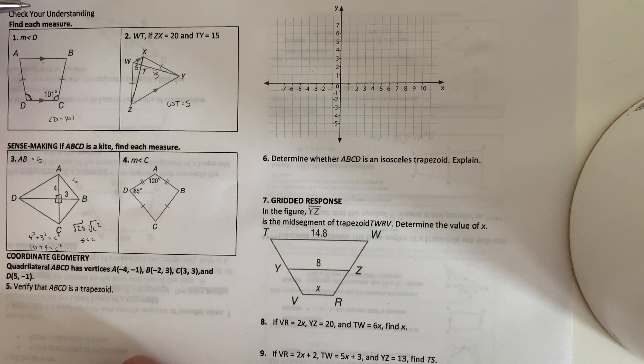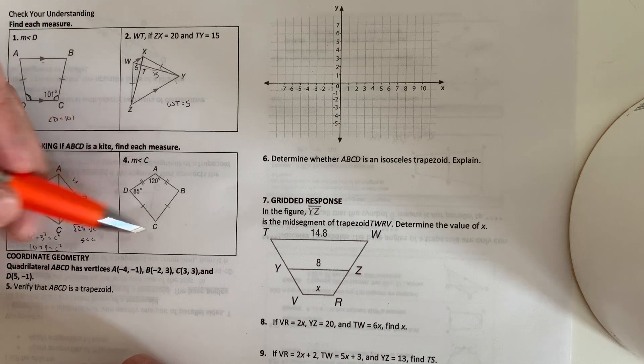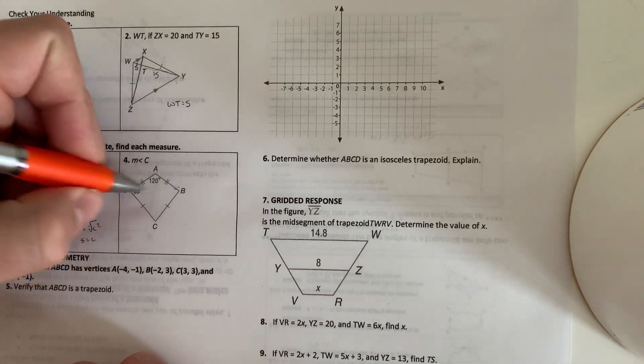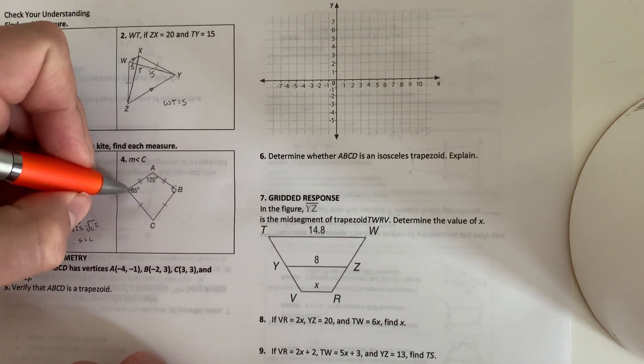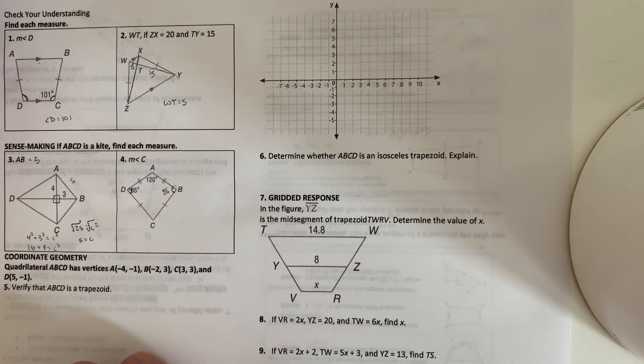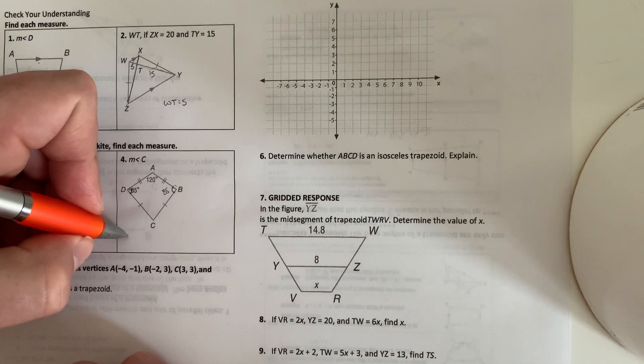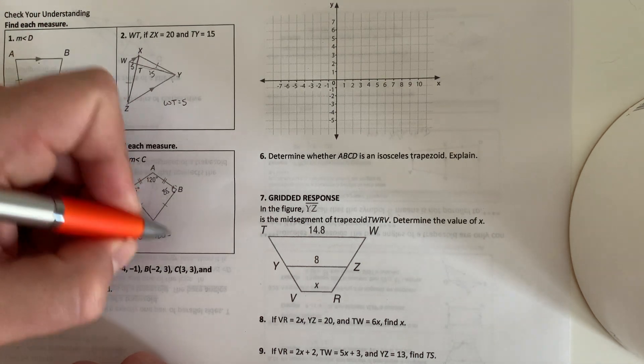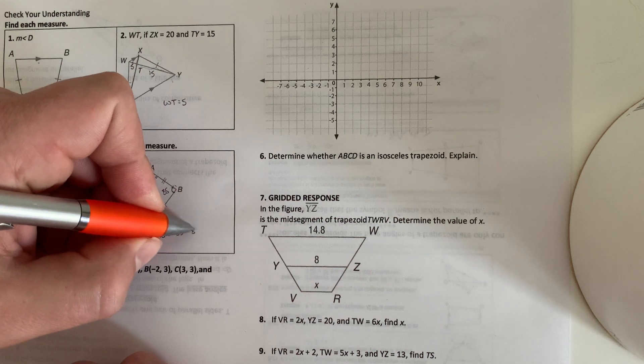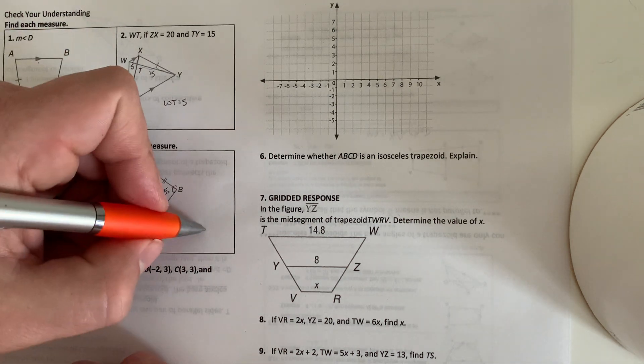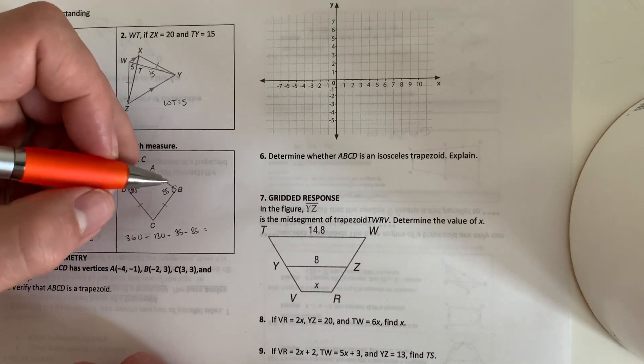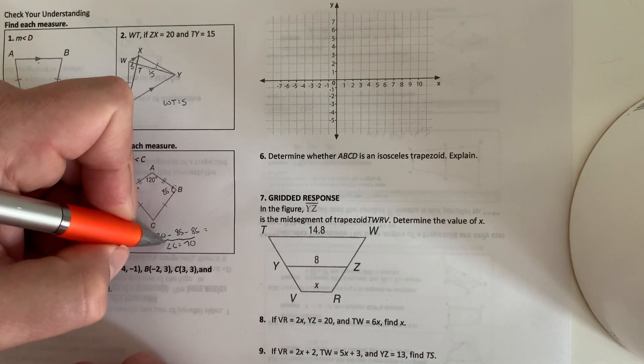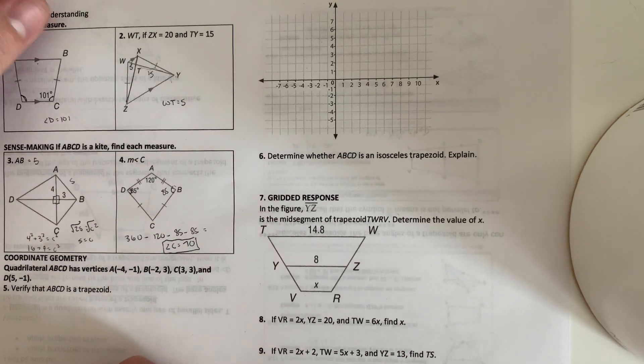Finding the angle C. So when this kite is marked this way, we know that the two opposite angles, these are the two opposite angles that will be congruent. So we know this side is also 85. So we're just going to do 360 minus 120 minus 85 minus 85 to get our angle C. So when we do that, angle C equals 70.